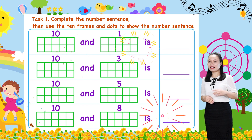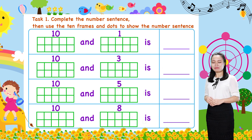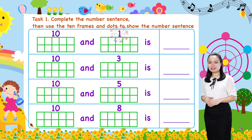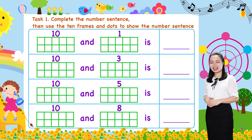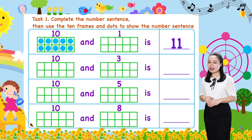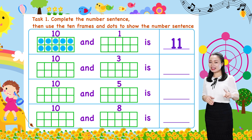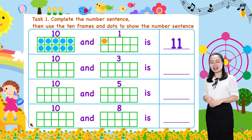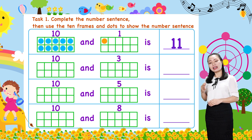Let's find the answers together. First, 10 and 1 is 11. To show this number sentence, we draw 10 dots in the 10-frame, then draw 1 more dot. So there are 11 dots that represent number 11.